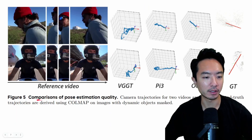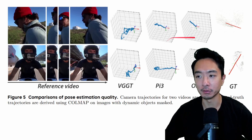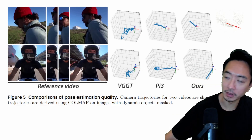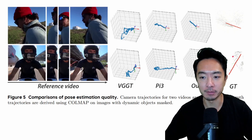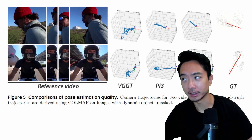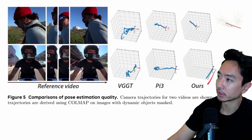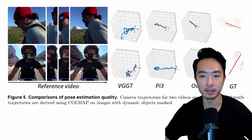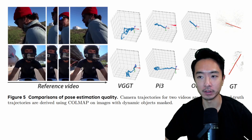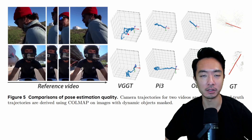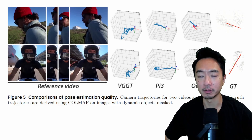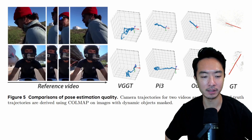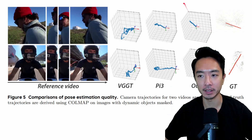Here is another example comparing the pose estimation quality. The ground truth is basically a straight line, and the results here are a straight line as well. But if you compare with VGGT and Pi3, the lines are kind of all over the place — scrambled up. Their model compared with the ground truth shows a nice linear line. These are essentially the camera paths, and you can see it does a pretty good job estimating the poses.